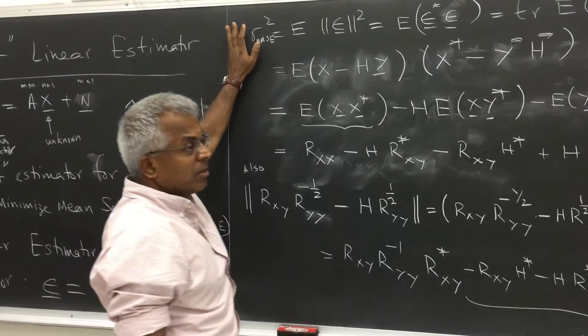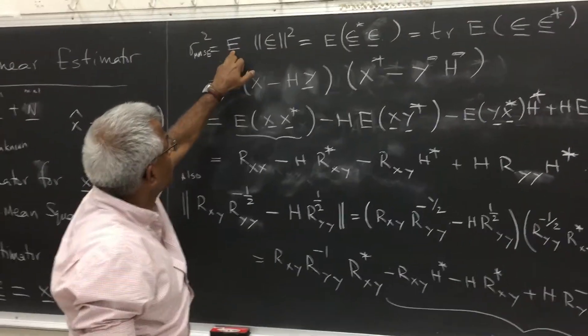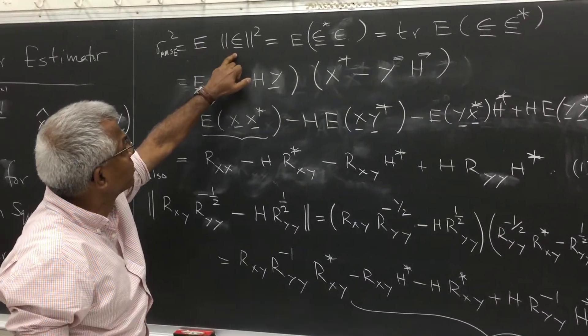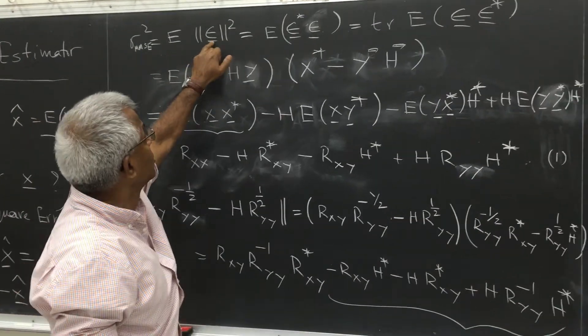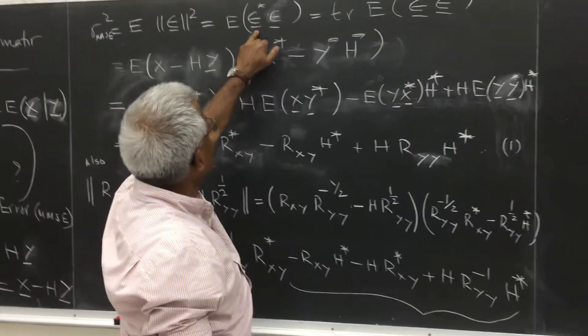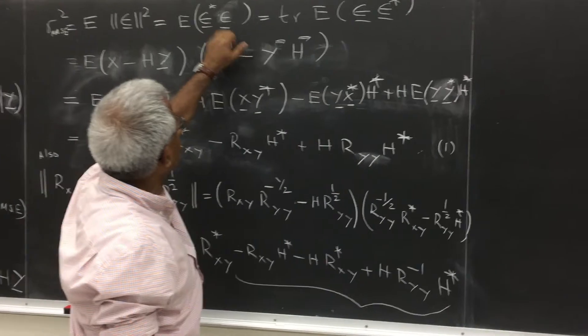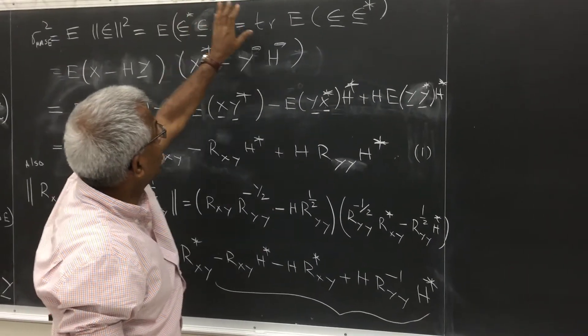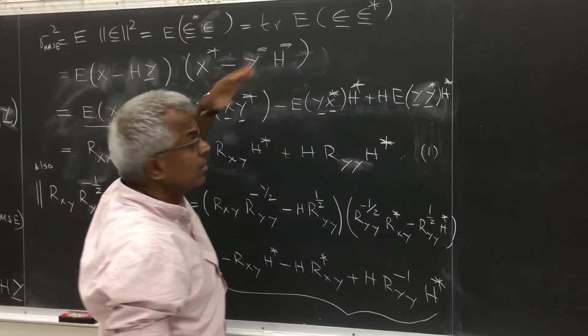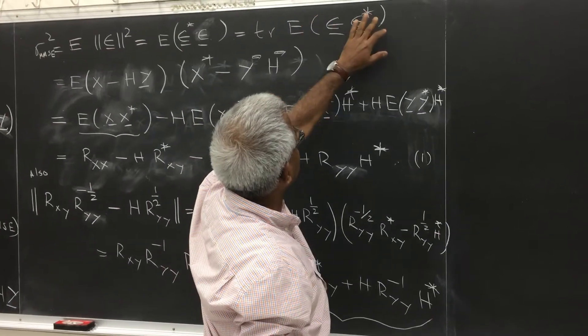So we minimize the mean squared error. Everything being random, we look at the expected value of the mean squared error. Epsilon is a vector. So we could write this as epsilon star epsilon, which is a scalar. Or equivalently, to capture all the entries, a trace of epsilon epsilon star.